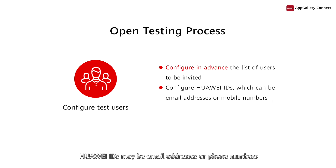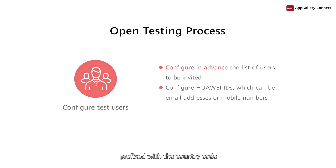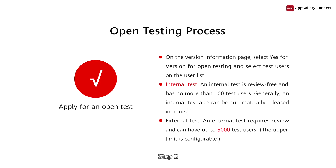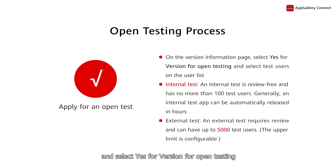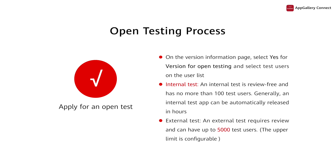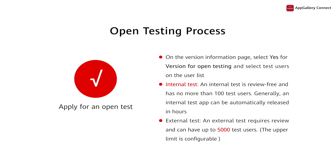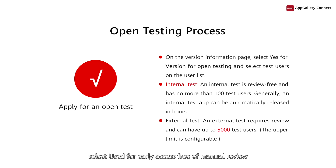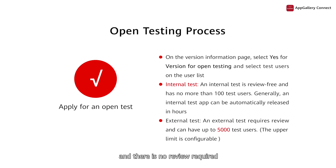Huawei IDs may be email addresses or phone numbers prefixed with the country code. Step 2: apply for an open testing version. To do this, click My Apps and select Yes for Version for Open Testing under Open Testing on the Version Information page. Then, select Test Users from the user list that was created in Step 1. If you only want an internal test, select Used for Early Access Free of Manual Review, in which case up to 100 users can be invited and there is no review required.